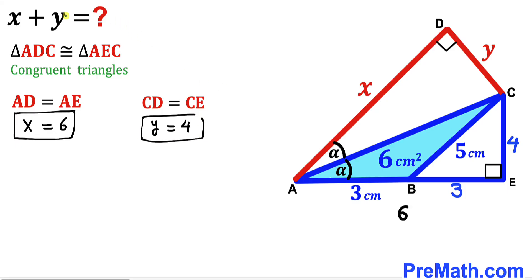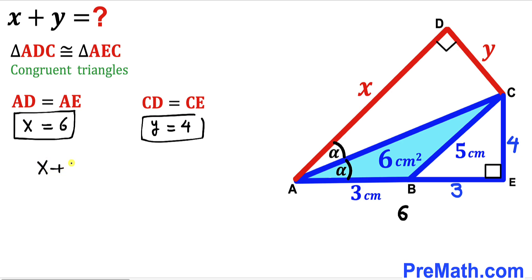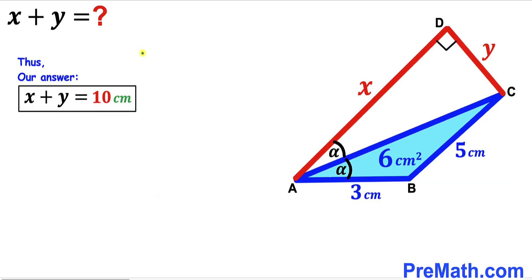For our final step, we find x + y. We have x = 6 and y = 4, so x + y = 6 + 4 = 10 cm. After all the calculations, our final answer is x + y = 10 cm.